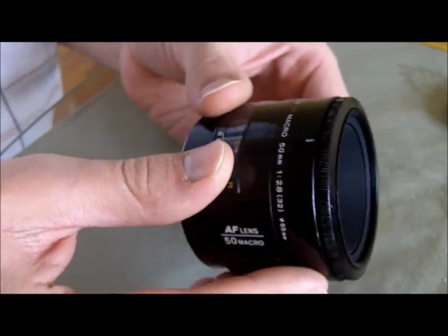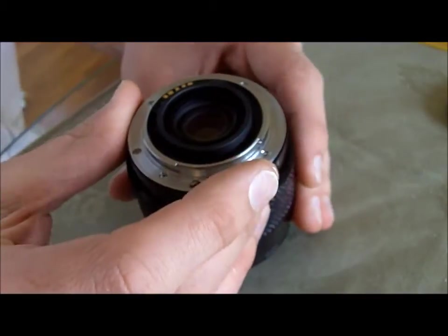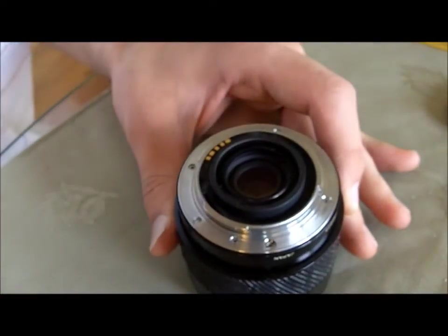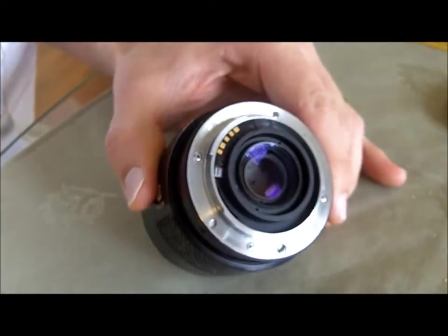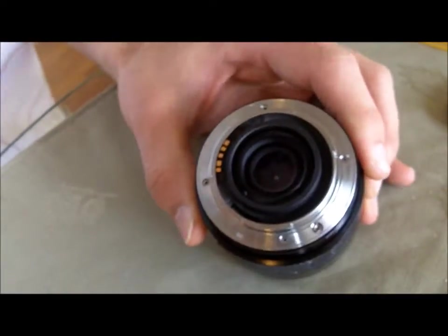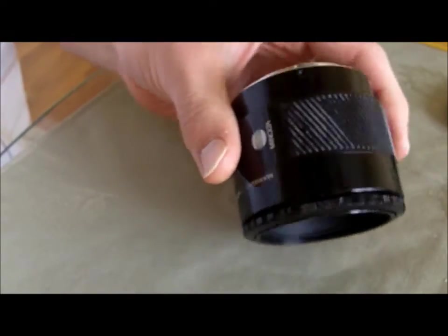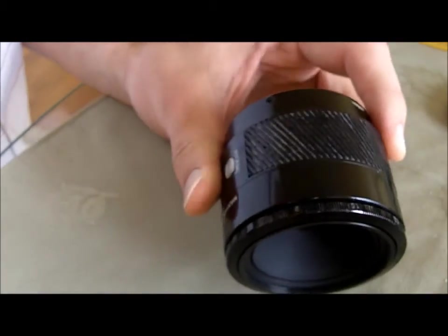I've got some dust in a Minolta 50mm 2.8 macro, so I'm going to take it apart and see if I can blow out the dust in between the elements. This is a video of how to get your 50 2.8 apart.